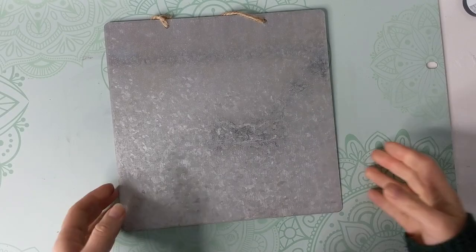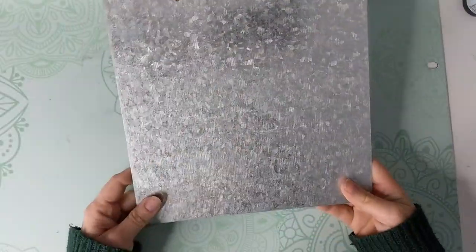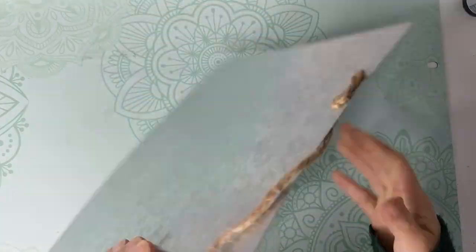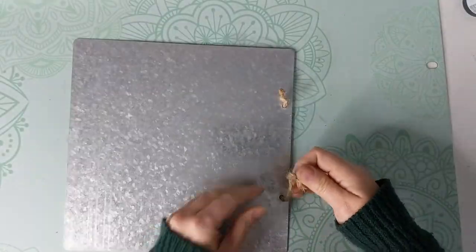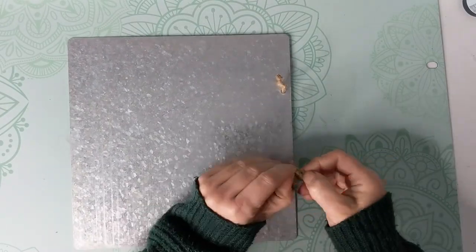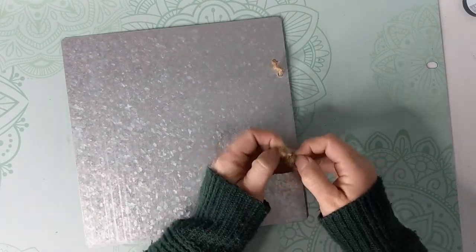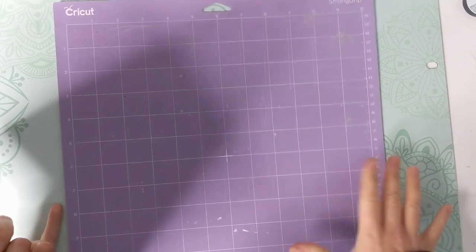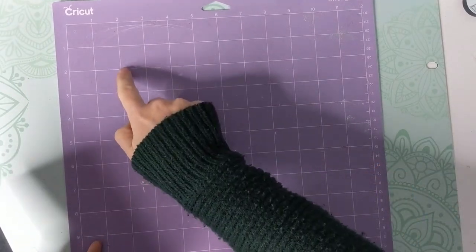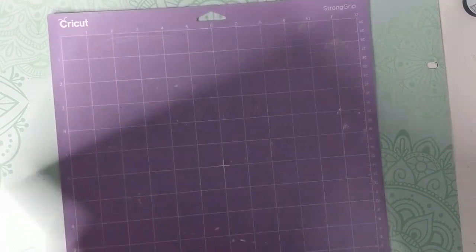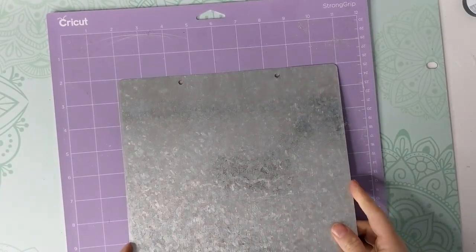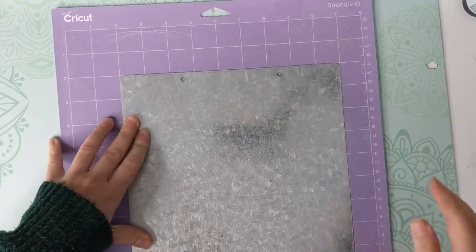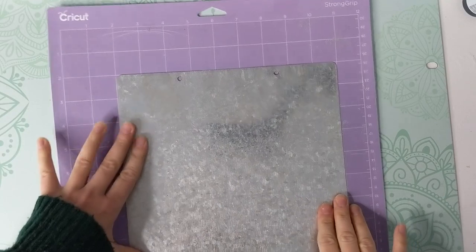So I found these metal sheets at Michael's in the clearance section. They were around $11 for six, so not too expensive. They have a little jute twine that I will remove so it can easily fit in the Cricut. As I said, you take the purple mat and find where to put the corner. That's at two and two, right here. This is where the corner of the metal sheet needs to be. So I align like this and press hard and everything should fit perfectly.